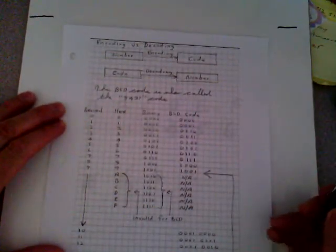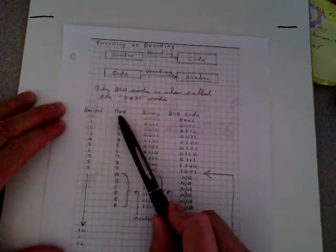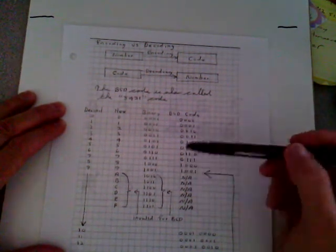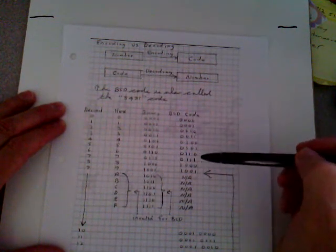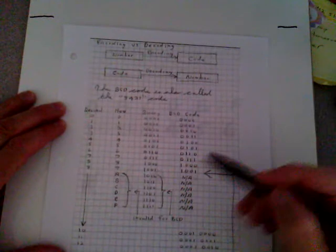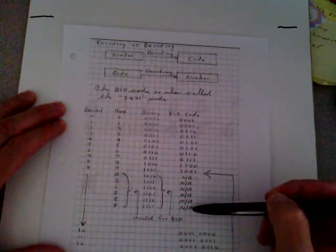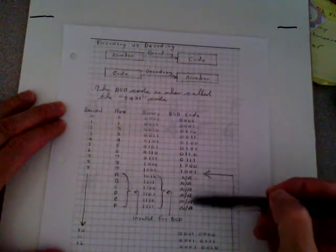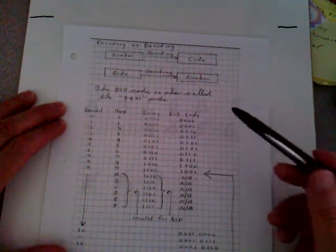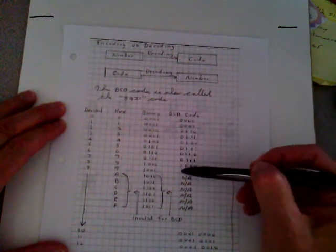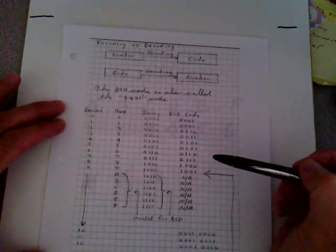If you take a look at the table, we have a decimal column, a hex column, a binary column, and a BCD code column. The BCD code starts at 0000 and progresses up to 9, which is 1001. After 9, you go to 10, but 10 is two digits, so you have to break it into two separate nibbles. There's no BCD code for 10 through 15 — they are not applicable. The only valid BCD codes are 0000 through 1001.